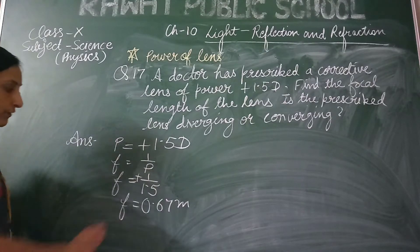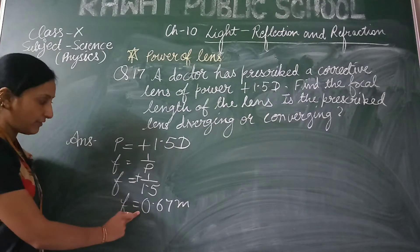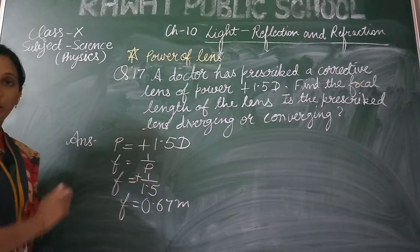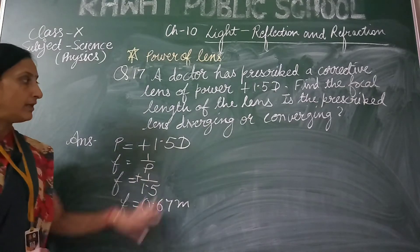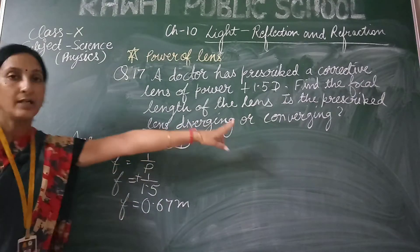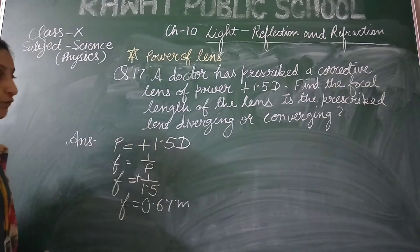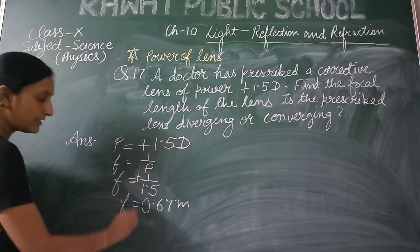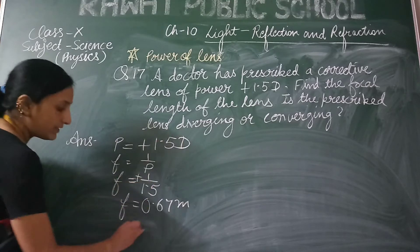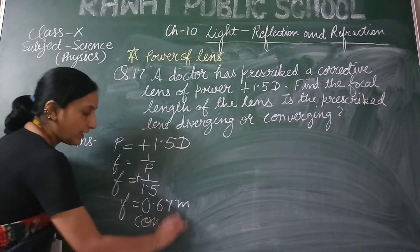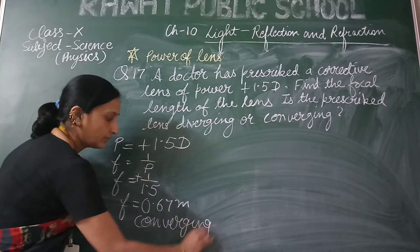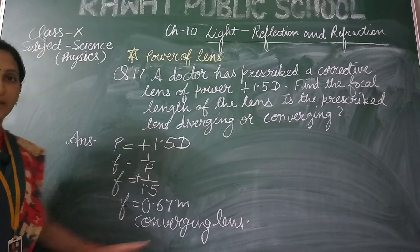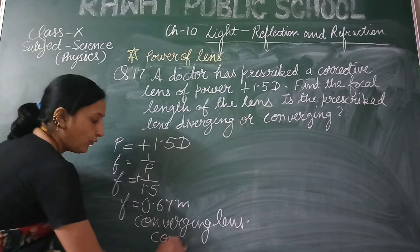As you can see, the focal length is with a positive sign, so it is obvious that the lens is a converging lens. Converging means a convex lens. So you can say that the lens is a converging lens, or you can say that the converging lens is a convex lens.